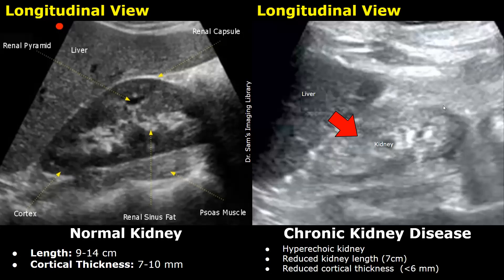Overall, the kidney appears very hyperechoic and heterogeneous, measuring around 7 centimeters in length. The normal length is between 9 and 14 centimeters, and the normal cortical thickness is between 7 and 10 millimeters. In chronic kidney disease, the cortical thickness may be less than 6 millimeters.